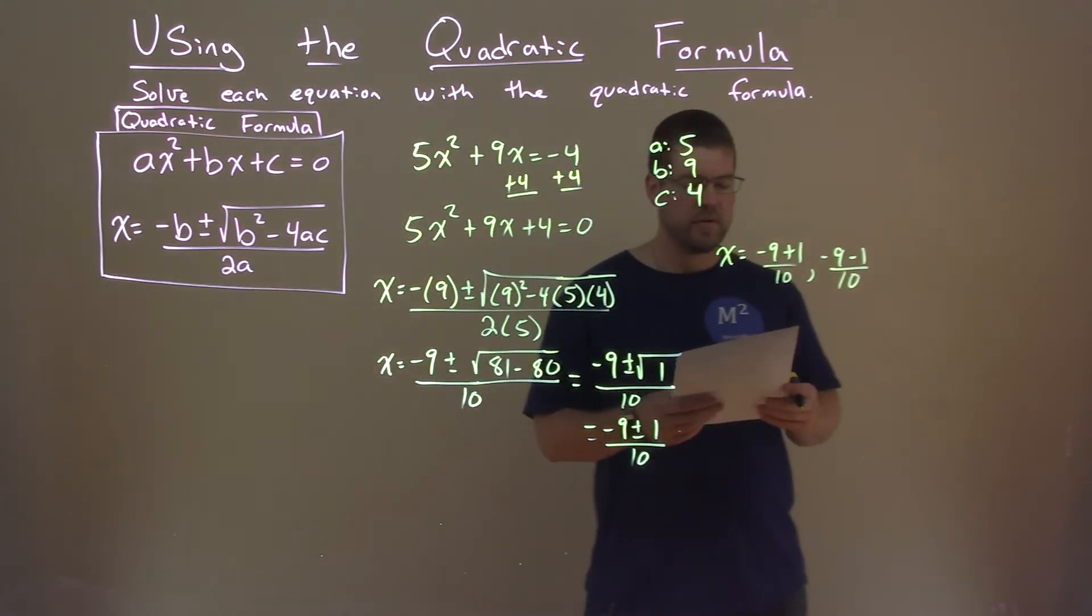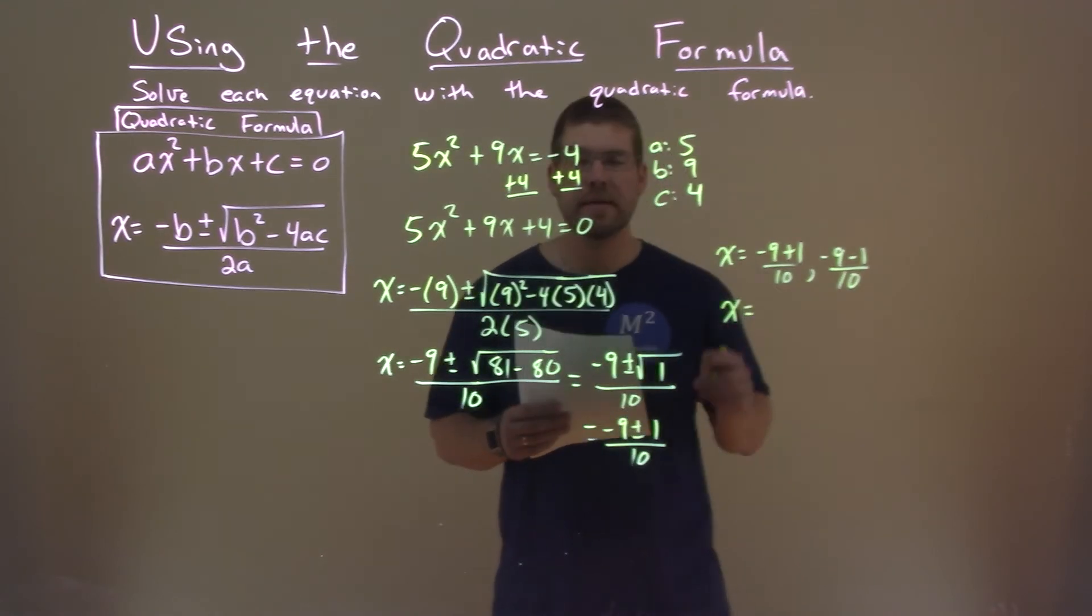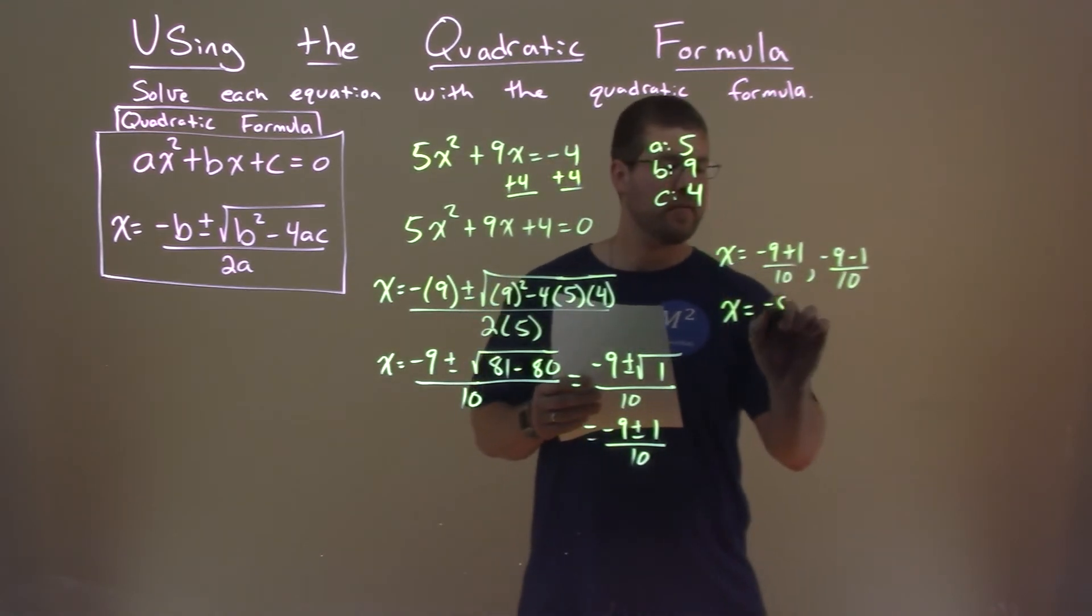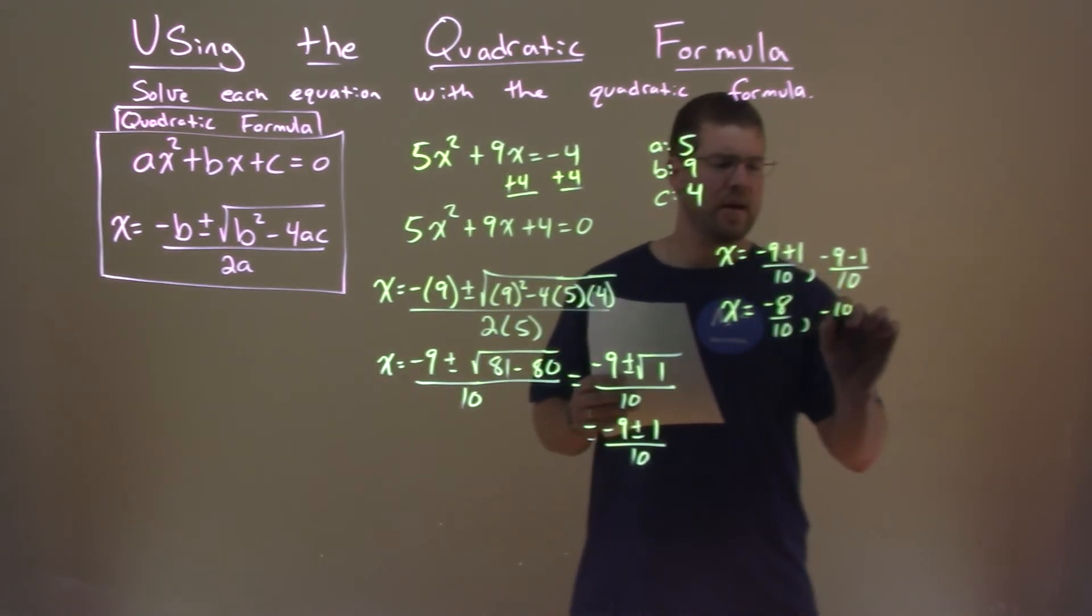And now what we're going to do is solve each one individually. x equals negative 9 plus 1, which is negative 8, over 10. And negative 9 minus 1 is negative 10 over 10.